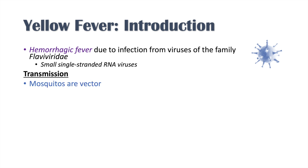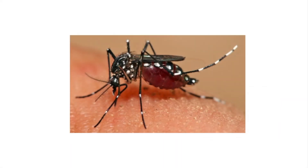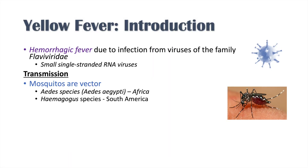Transmission of yellow fever involves mosquitoes — mosquitoes are the vector, and the species depends on what part of the world you're in. In Africa, it's generally the Aedes aegypti species. In South America, it is the Haemagogus species. Mosquitoes pick up the Flaviviridae virus, usually from monkeys, and transmit it to humans — from an infected monkey to a non-infected human, or from an infected human to a non-infected human.